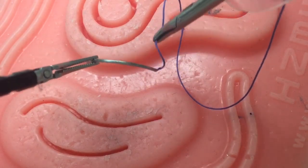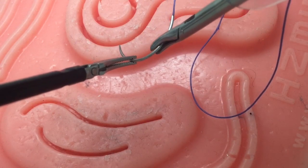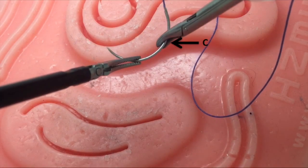Needle loading. Swivel the needle such that the light evenly reflects off point C. Then, using the needle driver, grasp the needle firmly at point C.